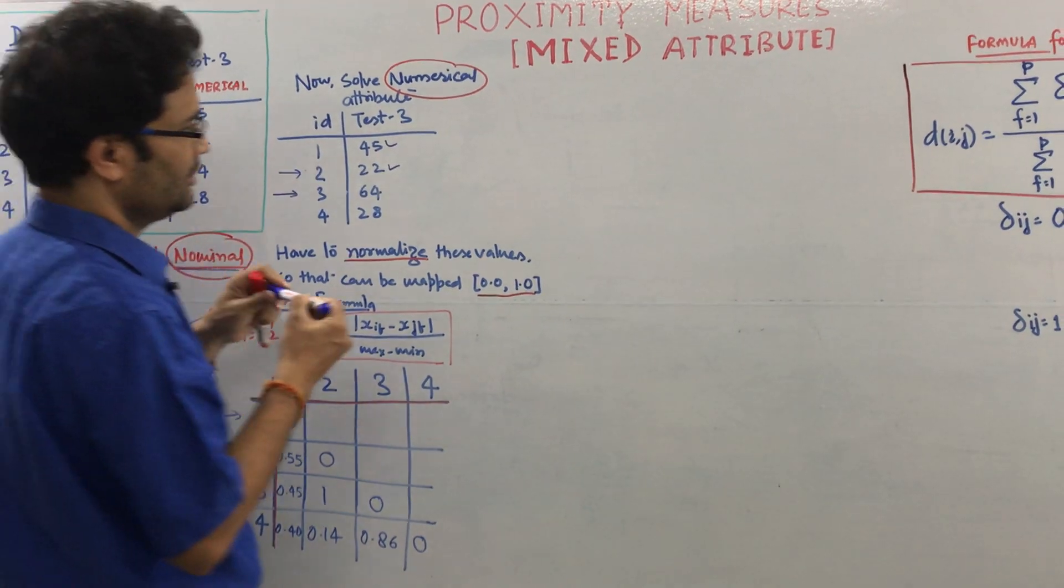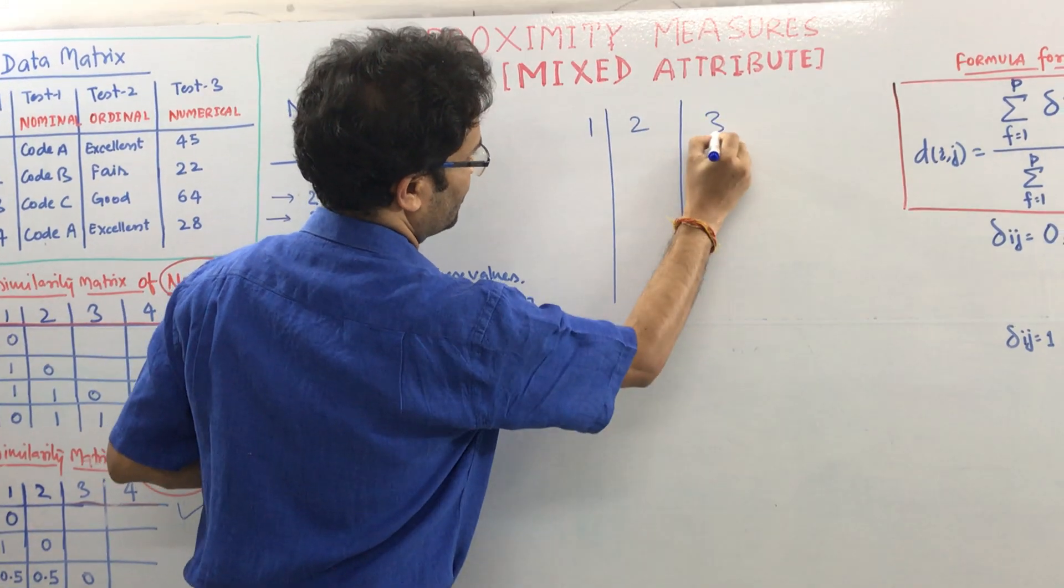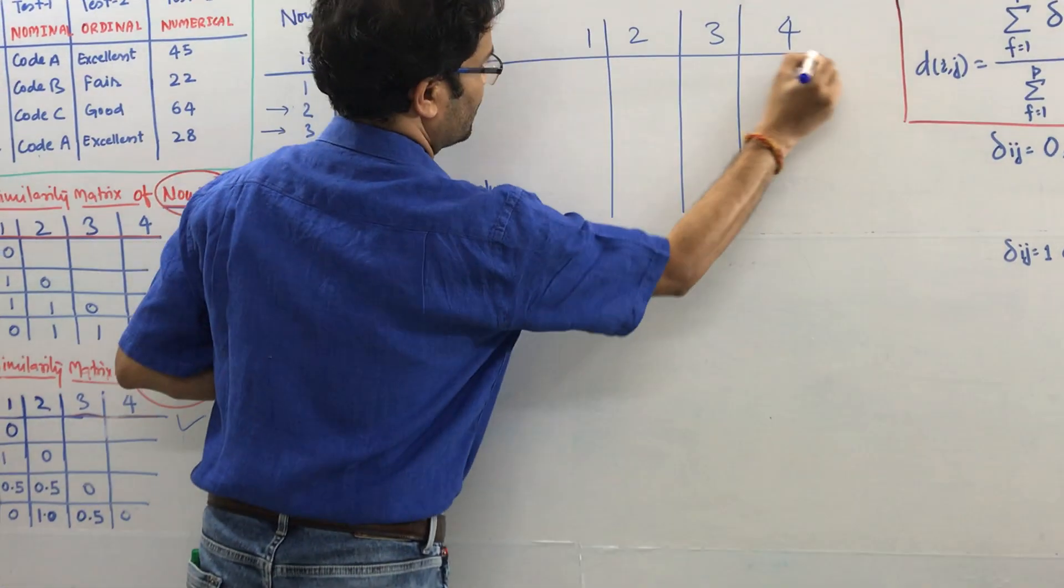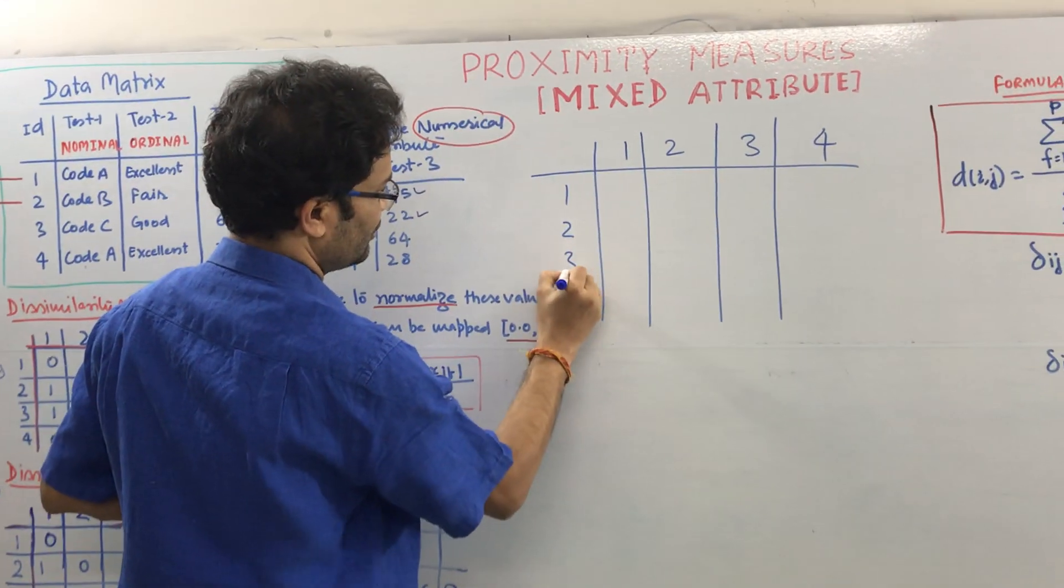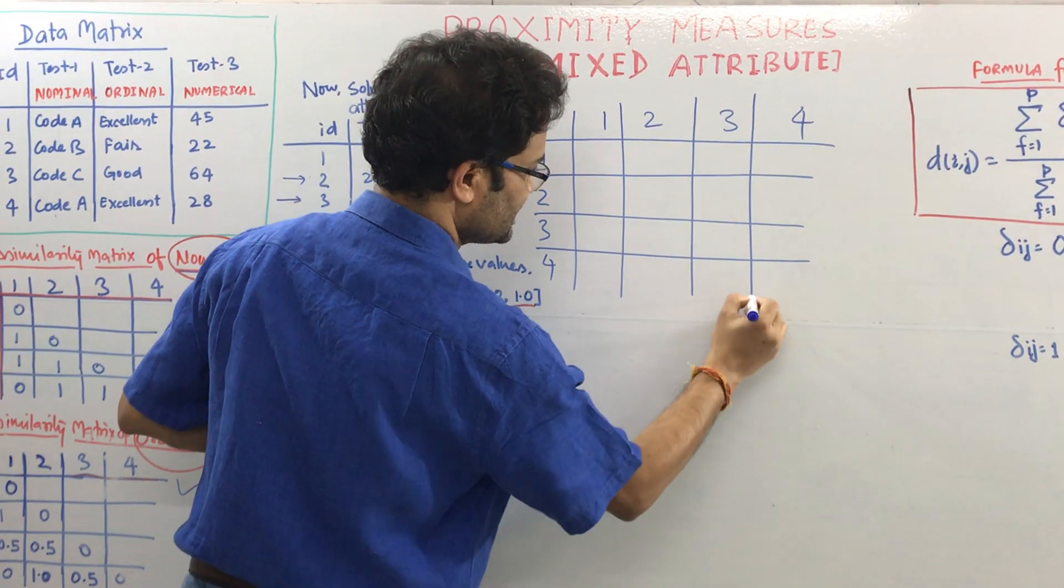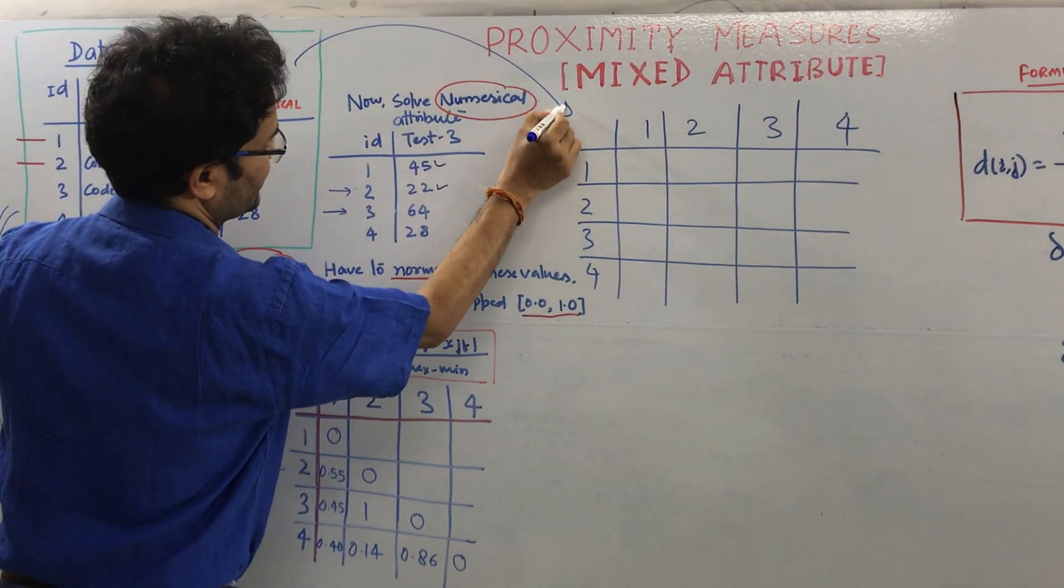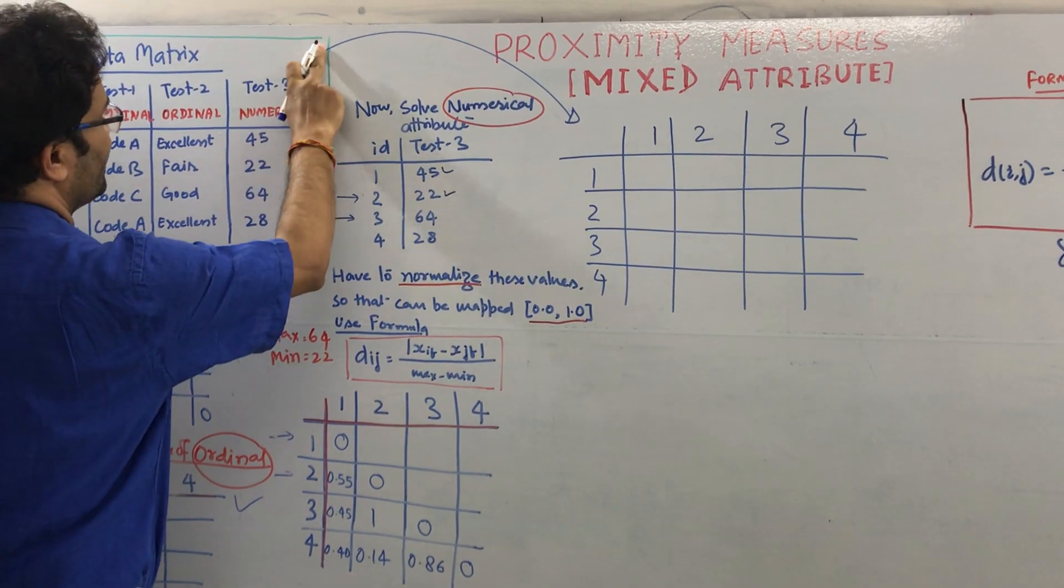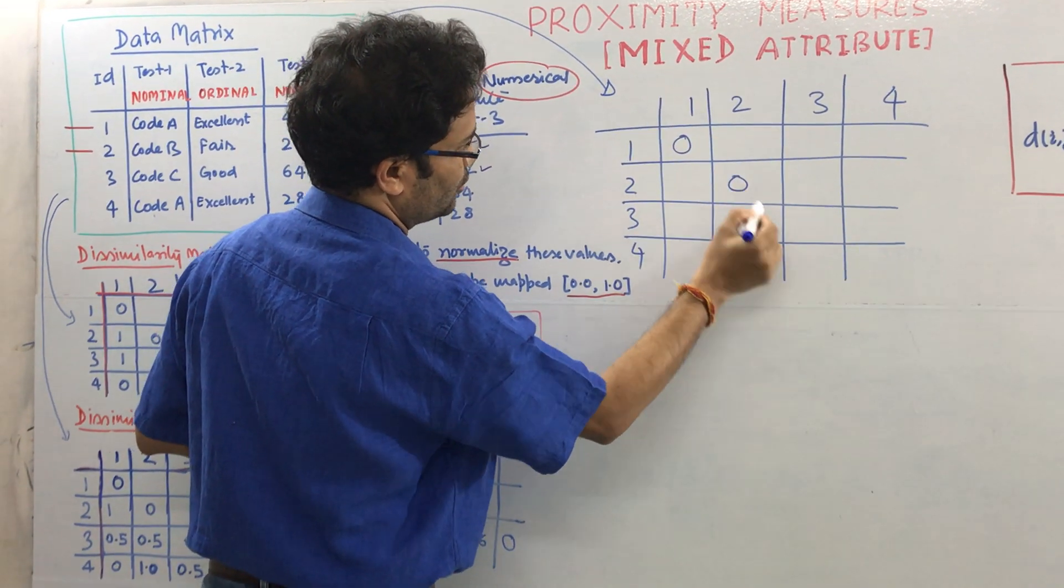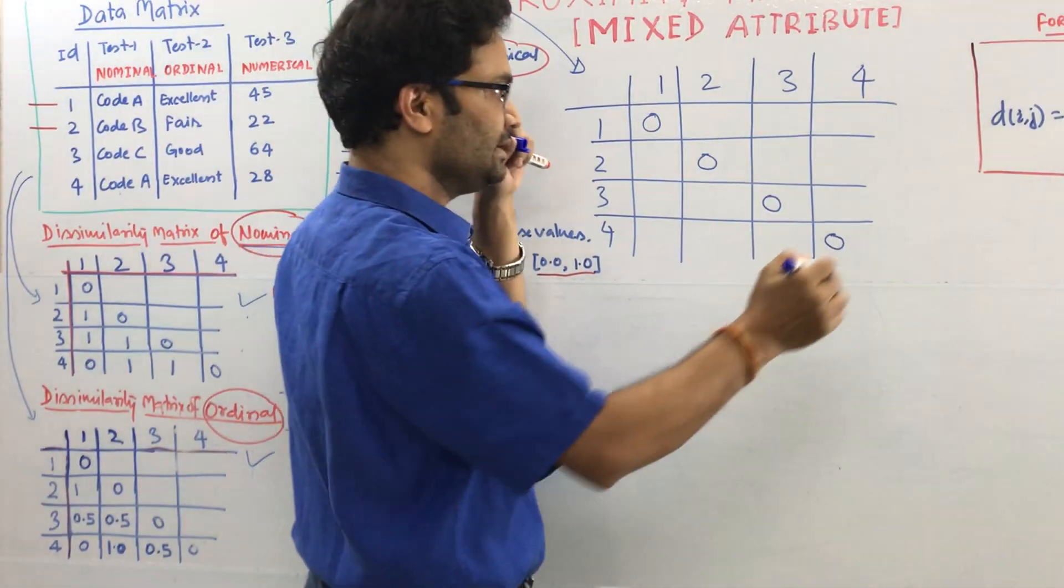Let me first draw our final matrix 1, 2, 3, 4. This time this is the dissimilarity matrix for this data set complete, all together. And we know between 1-1, 2-2 it will become 0. Now first understand what this formula says.